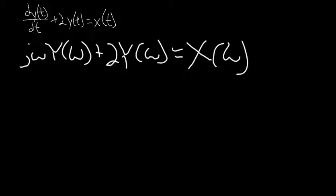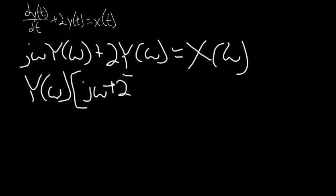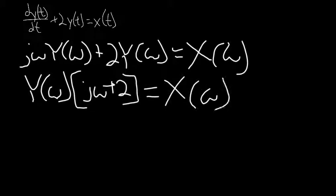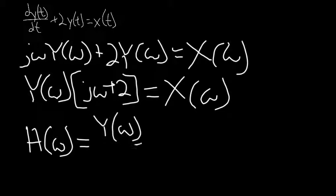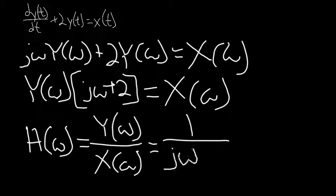Simplifying that, we get Y(omega) times the quantity j omega plus 2 equals X(omega). Therefore, H(omega) equals 1 over j omega plus 2.